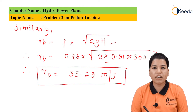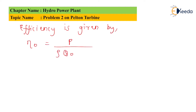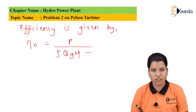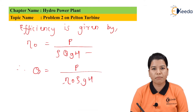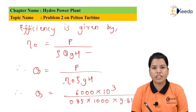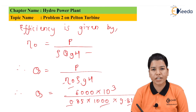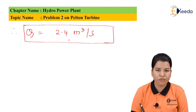Now let us find the value of discharge Q. The formula for efficiency is: efficiency equals P divided by rho times Q times g times H. Rearranging to find Q: Q equals P divided by efficiency multiplied by rho multiplied by g multiplied by H. Substituting: Q equals 6000 times 10³ divided by 0.85 times 1000 times 9.81 times 300. After solving, discharge Q is equal to 2.4 meter cube per second.